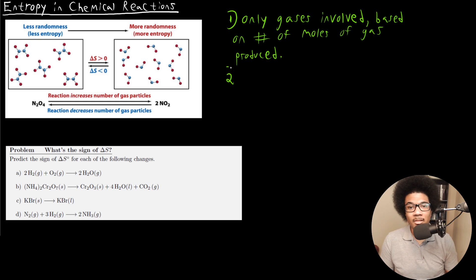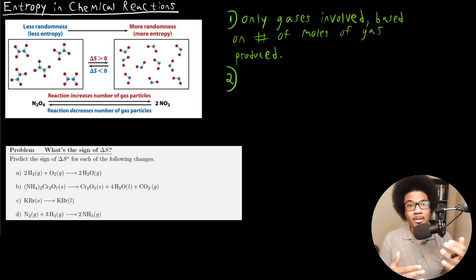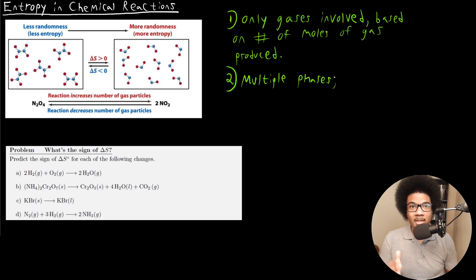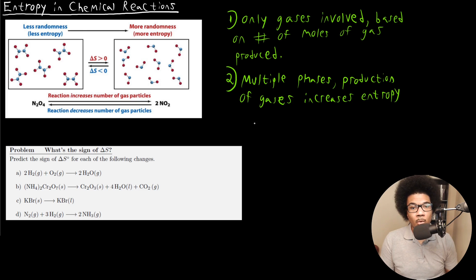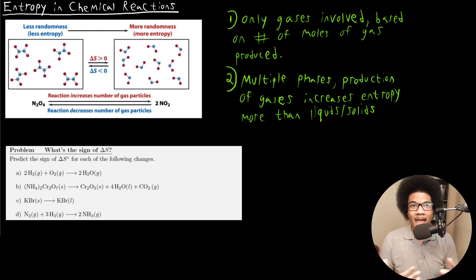Now, when there are multiple phases involved, it gets a little bit more tricky than just counting the moles. We talked about in the first video in this unit that gases are going to have more entropy than liquids, and liquids more entropy than solids. So those rules apply here as well. If you have multiple phases, then production of gas is going to involve more entropy — production of gases increases entropy more than liquids and solids. So if you have some liquid that's reacting and producing a gas, there's going to be an increase in entropy. Let's look at some examples and predict whether the entropy is going to increase or decrease.